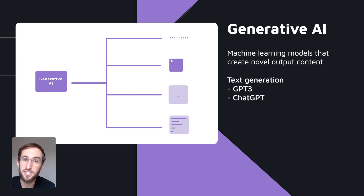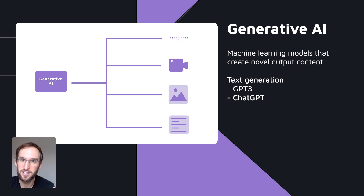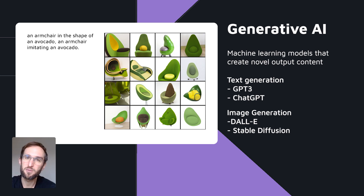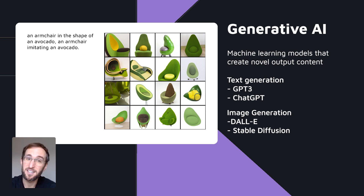GPT-3 and ChatGPT are examples of generative AI for text generation. There are also image generation models such as DALL-E from OpenAI and Stable Diffusion, which is an open source model used in apps such as Lenza.